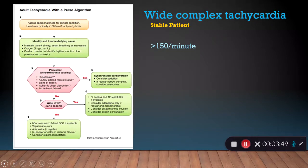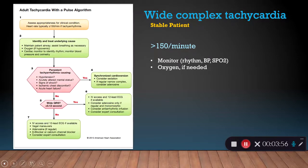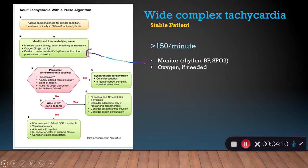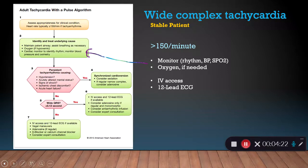Let's look at if our patient is stable — we'll start at the green box. We're going to check the rhythm, put them on the monitor, check the blood pressure, check pulse oximetry, and give them oxygen if needed. These patients are going to have a heart rate of over 150. Because they're stable, we can start an IV — we have time.